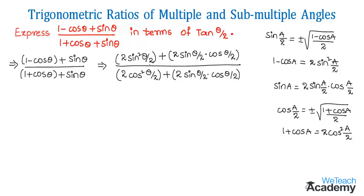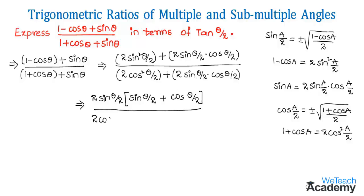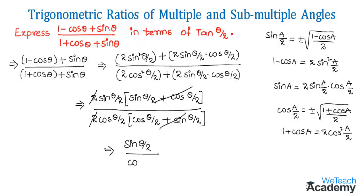Observing the numerator, 2 sin(theta/2) can be taken as the common factor. So the numerator becomes 2 sin(theta/2) times (sin(theta/2) plus cos(theta/2)). In the denominator, 2 cos(theta/2) is the common factor, giving 2 cos(theta/2) times (cos(theta/2) plus sin(theta/2)). The factor (sin(theta/2) plus cos(theta/2)) and the factor 2 cancel from both numerator and denominator, leaving sin(theta/2) divided by cos(theta/2).